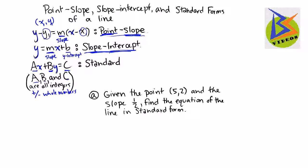So let's take a look at this example, then, seeing all three of these forms. So A says, given the point (5, 2) and the slope 1/2, find the equation of the line in standard form. So if we are given a point and we are given the slope, let's use point-slope form.